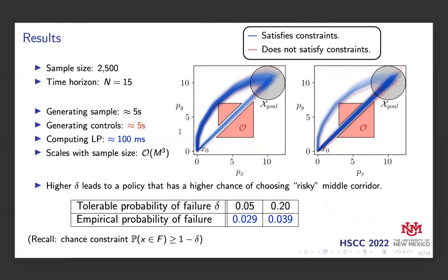In addition, the algorithm is very fast, taking approximately 100 milliseconds to compute the solution, though it took approximately five seconds to generate the sample and the control actions used by our policy. This is an area of current research.